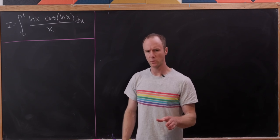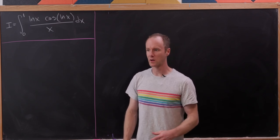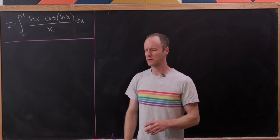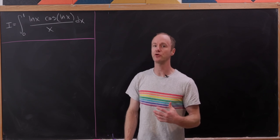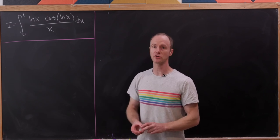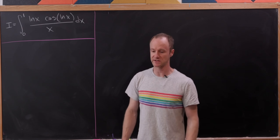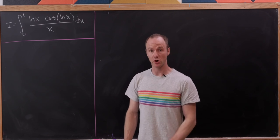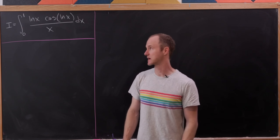We're going to explore — and notice that I'm not using the word 'evaluate' here — the integral from 0 to 1 of the natural log of x times the cosine of the natural log of x, all over x, dx.